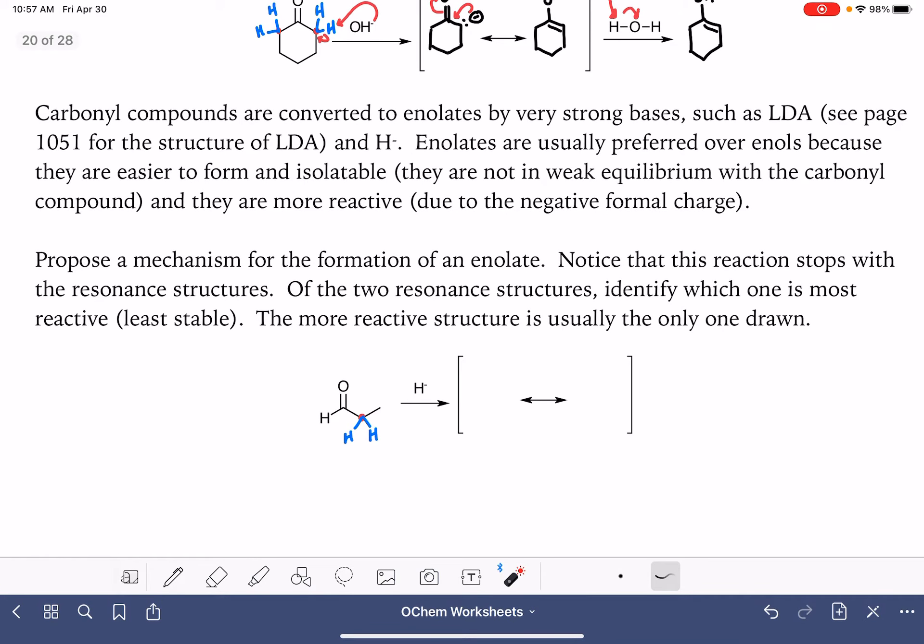So here we're going to propose a mechanism for the formation of the enolate using H minus. This would come from LAH or maybe NaBH4, one of those hydride reagents. In this, our hydride is going to attack an alpha hydrogen and move the electrons onto the alpha carbon.